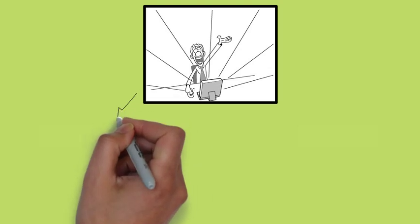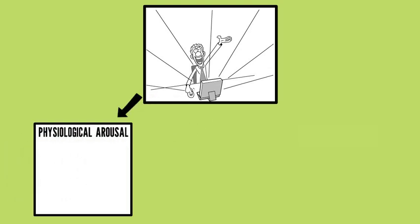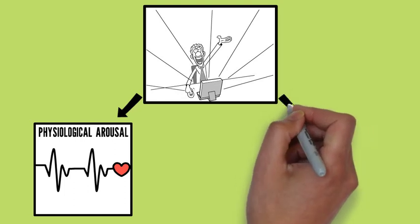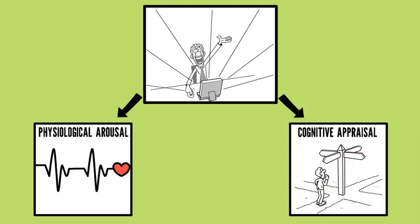According to Schachter and Singer, when we experience an emotion, our bodies first experience physiological arousal such as an increased heart rate or sweating. However, this arousal could be caused by a variety of different factors. So we must then interpret and identify the source of the arousal through cognitive appraisal or appraisal of the situation.